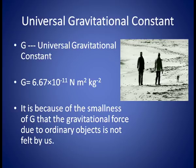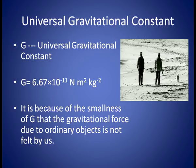The force of gravitation is F = G·m1·m2 / r², where G is the universal gravitational constant. The value of G is so small that it could not be determined by Newton or his contemporary experimentalists. It was determined by Cavendish for the first time about 100 years later. The value of G is 6.67 × 10⁻¹¹. Because of this smallness, the gravitational force due to ordinary objects like you and your friend is not felt by us.